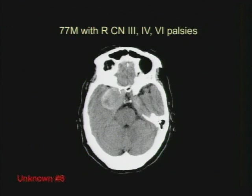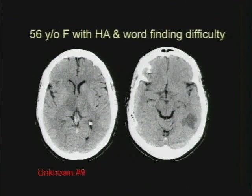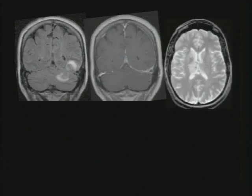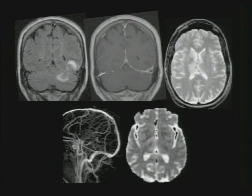The 77-year-old comes in with multiple cranial nerve palsies — third, fourth, and sixth. This is a 56-year-old with a headache and word-finding difficulty. This is a non-contrast CT. Here's the MRI in that patient — this is a diagnosis that's often overlooked and not thought about. Here's the MRV in that patient and the ADC map.